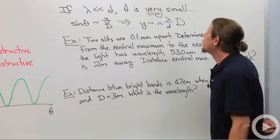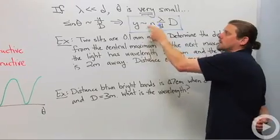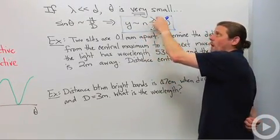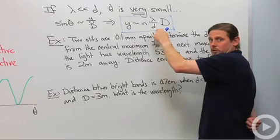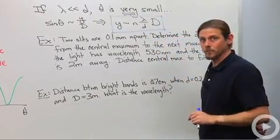So then that allows us to write y is approximately an integer multiple of the wavelength divided by the distance between the two slits times the distance to the screen.